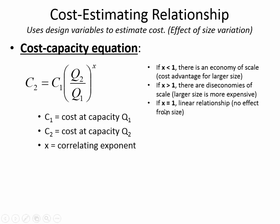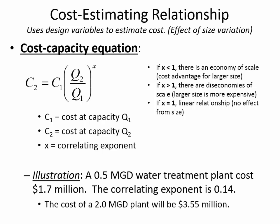When X equals 1, that's a linear relationship. If you buy 100 tons of coal, you pay one price; 200 tons of coal, they're not giving you a discount for buying a lot — it's just double the price. They call X the correlating exponent — the thing that relates whether you have an economy of scale or a diseconomy of scale.